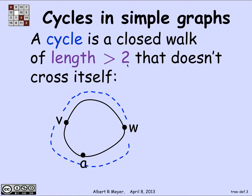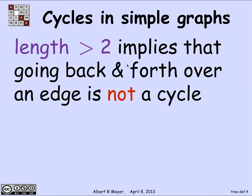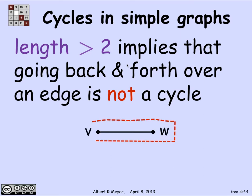The length greater than two is the difference between the definition of cycle in simple graphs versus directed graphs. In a directed graph it's perfectly possible to have a self-loop of length one, which is an interesting and important kind of cycle. But we forbid them in simple graphs because there's no way to avoid having a cycle of length two — you always have the ability to go back and forth across an edge. That's not interesting, so we don't consider that to be a cycle. A cycle then has to be of length greater than two.